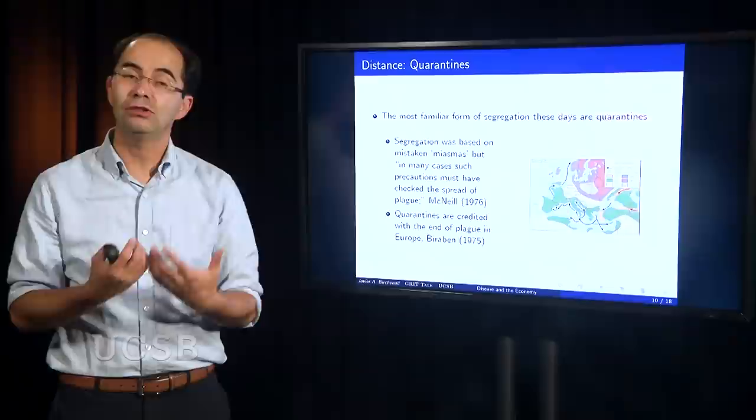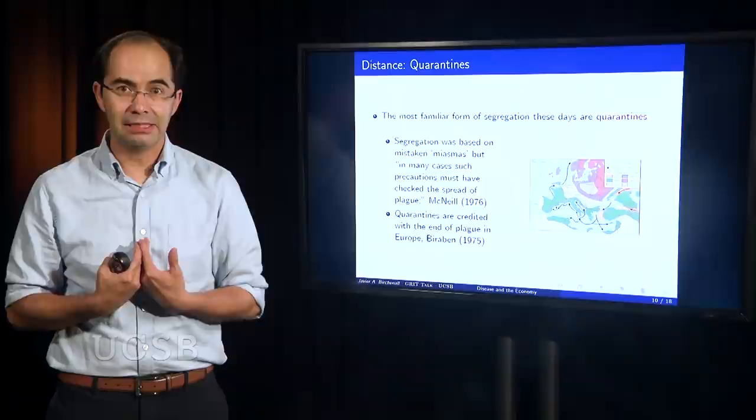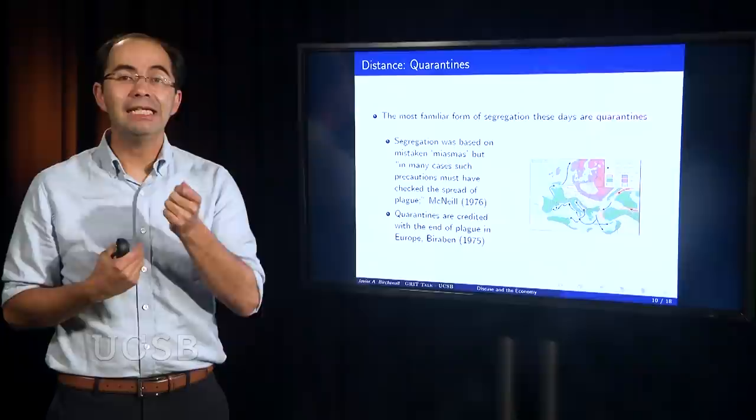This is a system that separates people sort of along the lines of the picture I mentioned. We try to keep these interactions between healthy and diseased to a minimum. The particular point about the caste is it's not legally enforced. It is enforced by social sanctions. It's a social norm. It's not a legal norm. The most familiar form of segregation by disease today, and we all have lived it, are quarantines.